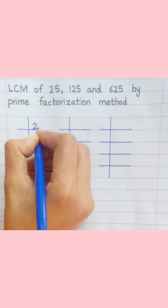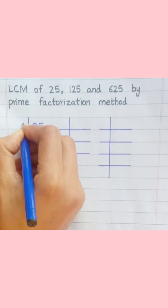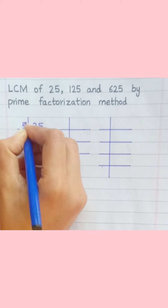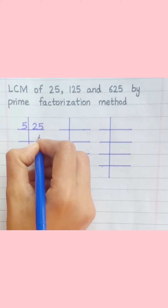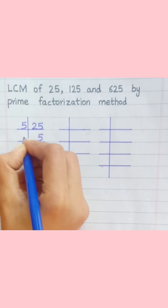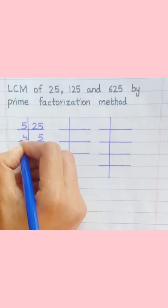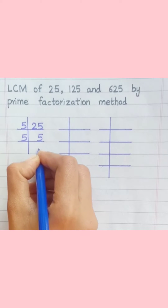25: 5 fives are 25, 5 ones are 5. So 25 equals 5 multiply 5.